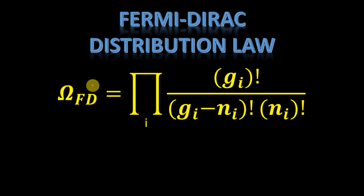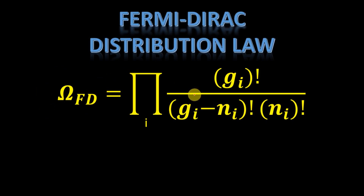As we did before, we will take its logarithm, then apply Stirling's approximation, after that we will take its derivative and then use the method of Lagrange's multipliers, setting it equal to zero to get our answer.